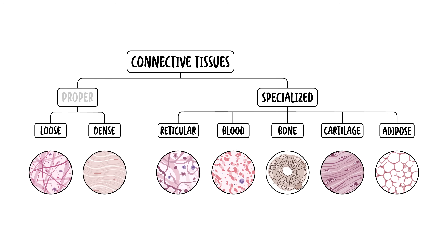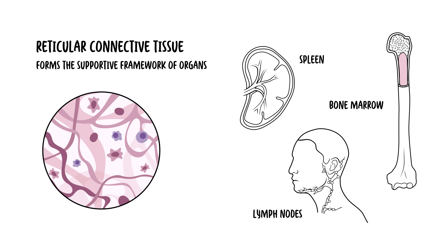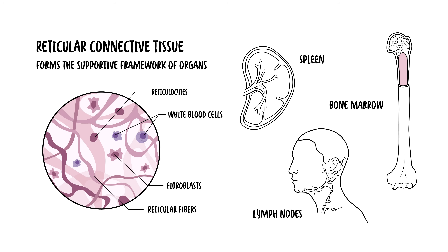So those were the connective tissue proper. Let's look at specialized connective tissue, beginning with reticular connective tissue. This type forms the supportive framework of organs such as your lymph nodes, spleen, and bone marrow. It's characterized by a network of fibroblasts, specifically reticulocytes, as well as reticular fibers. Reticular connective tissue supports other cell types, specifically white blood cells, which is why they are found predominantly in lymph nodes and spleen.